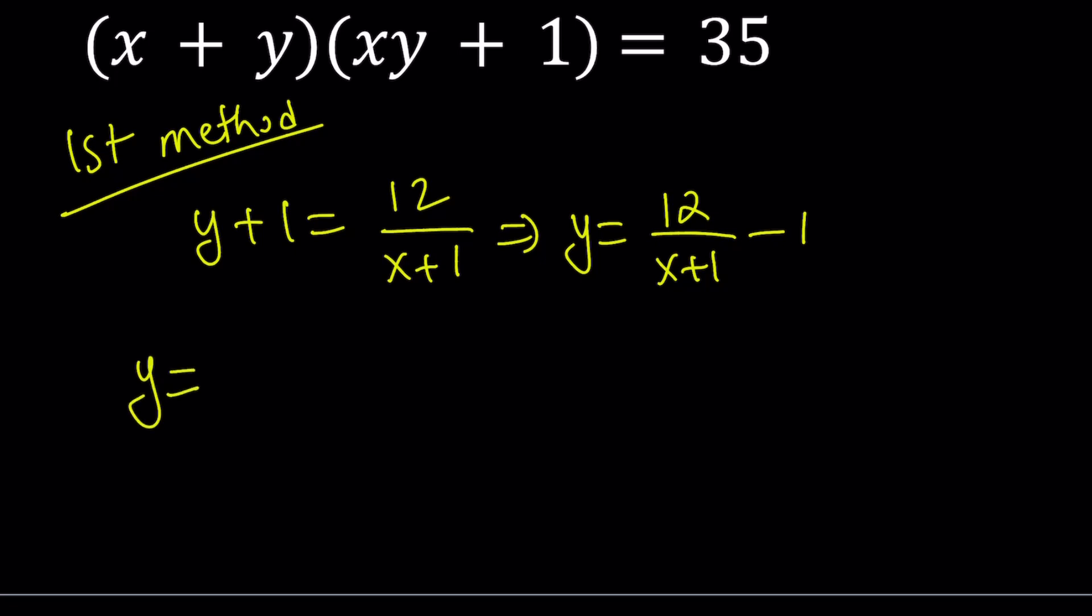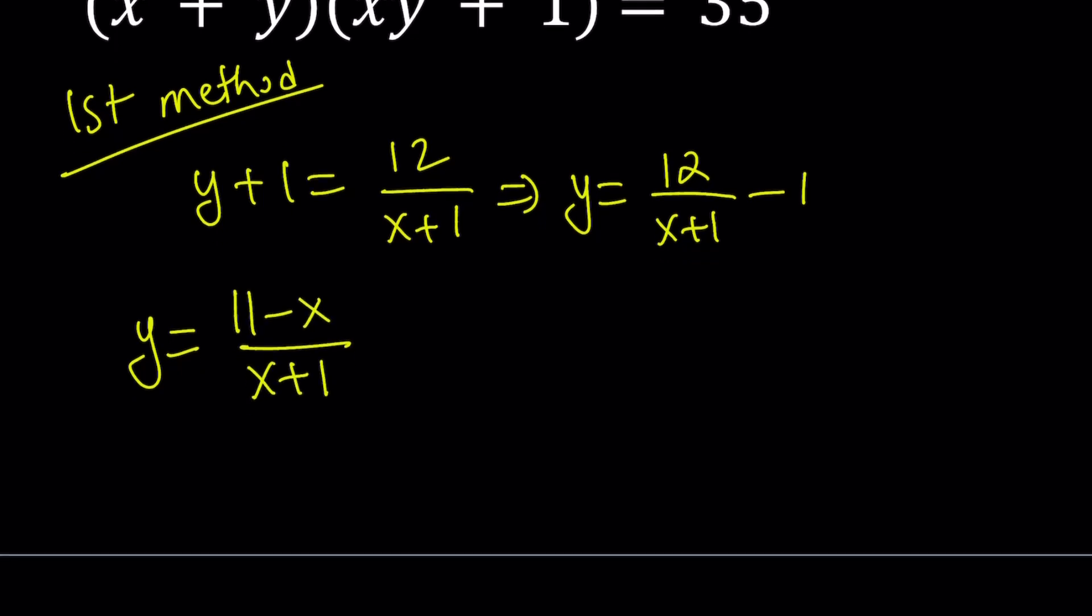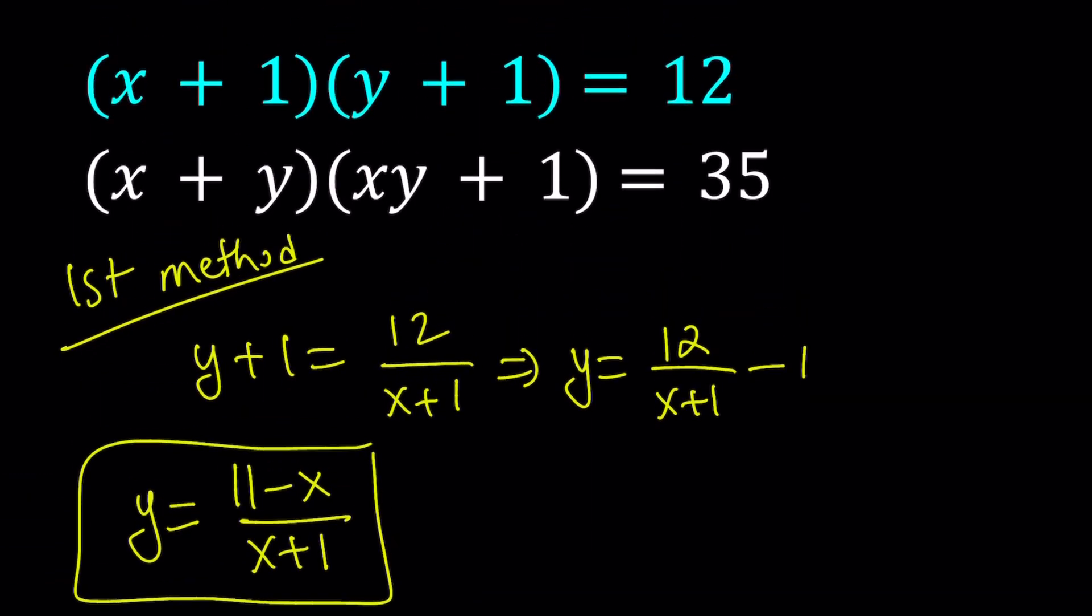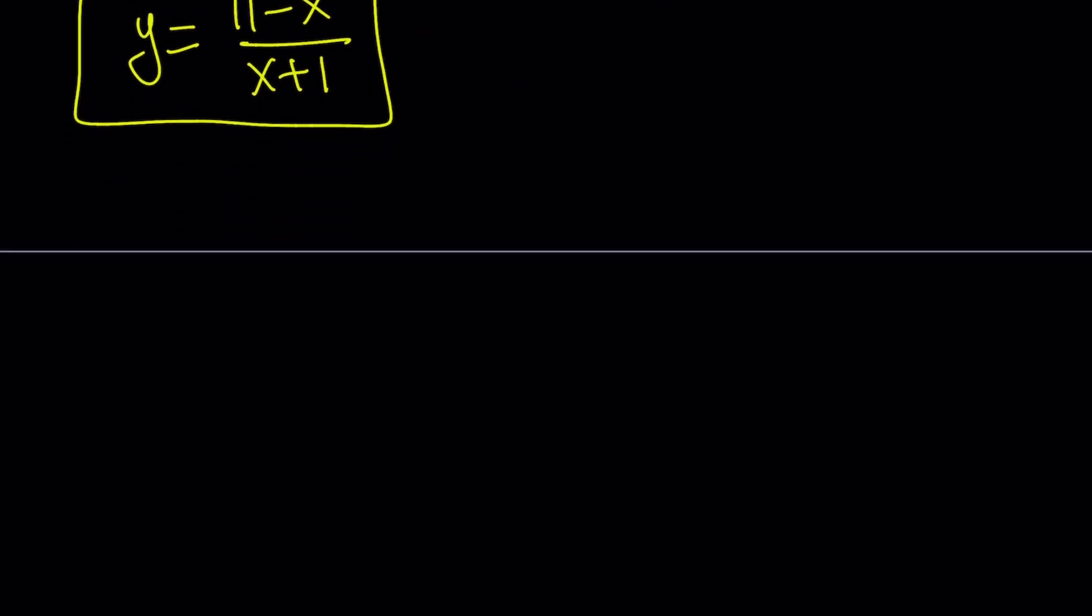And after making a common denominator, we get (12-x-1), which is (11-x)/(x+1) for the y value. Now, we got y in terms of x from the first equation. Let's go ahead and substitute that into the second equation. And this is what we get.